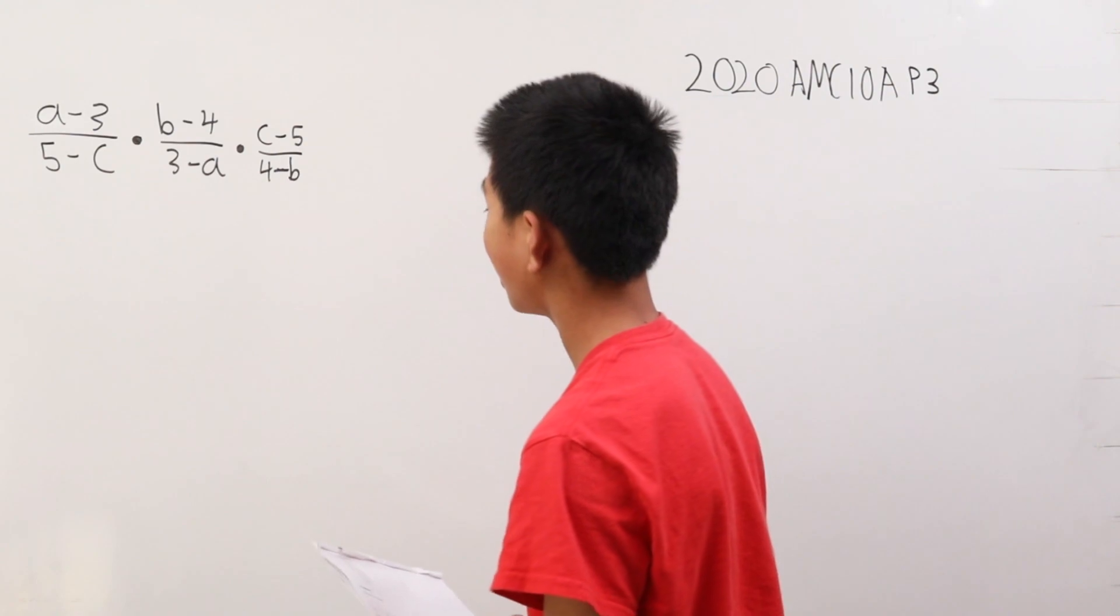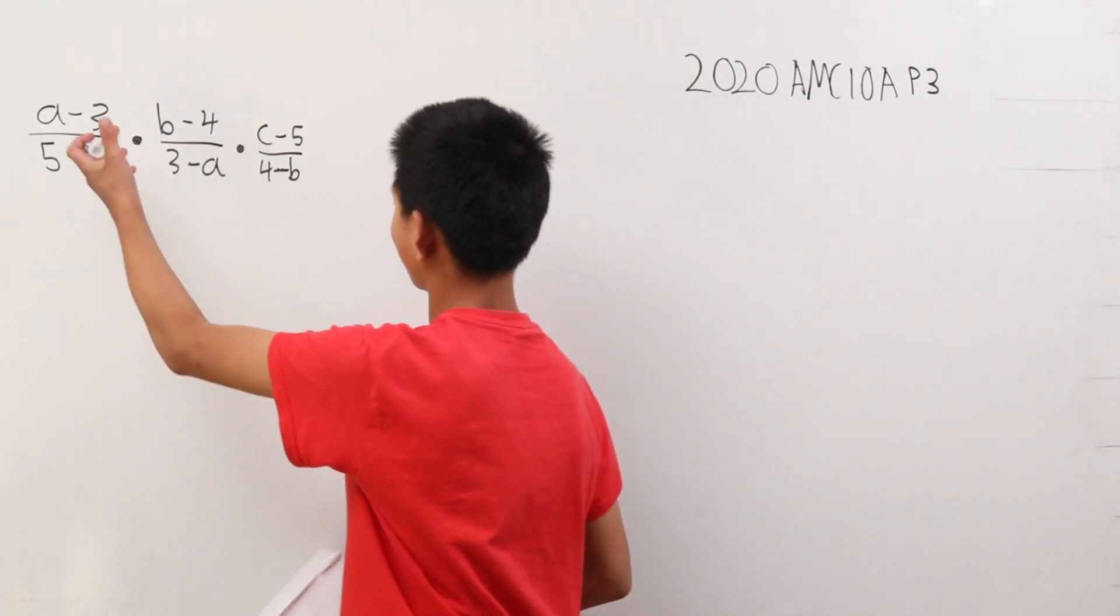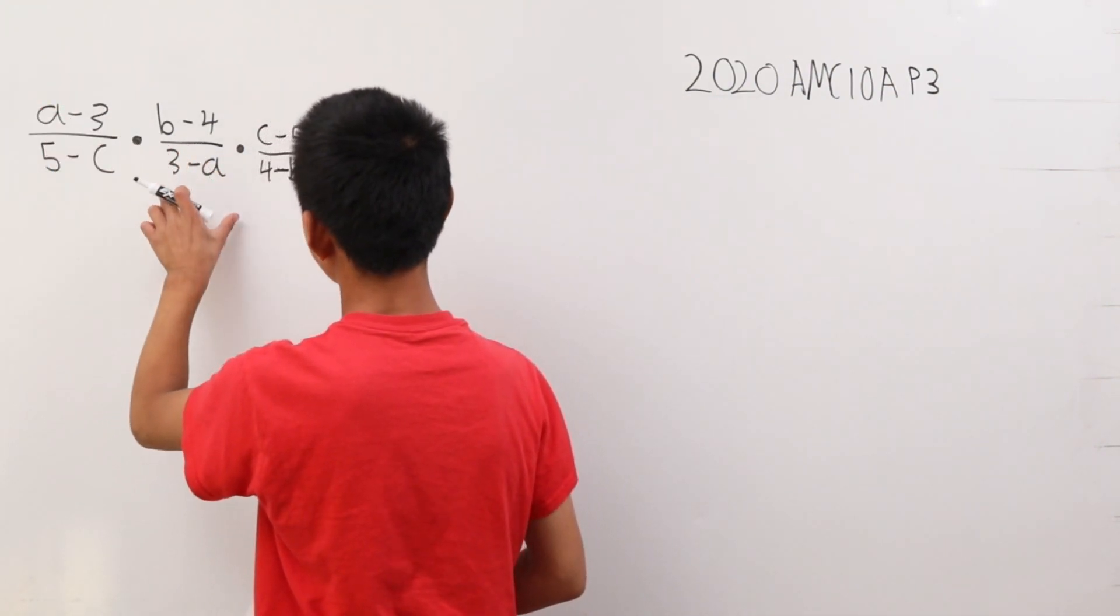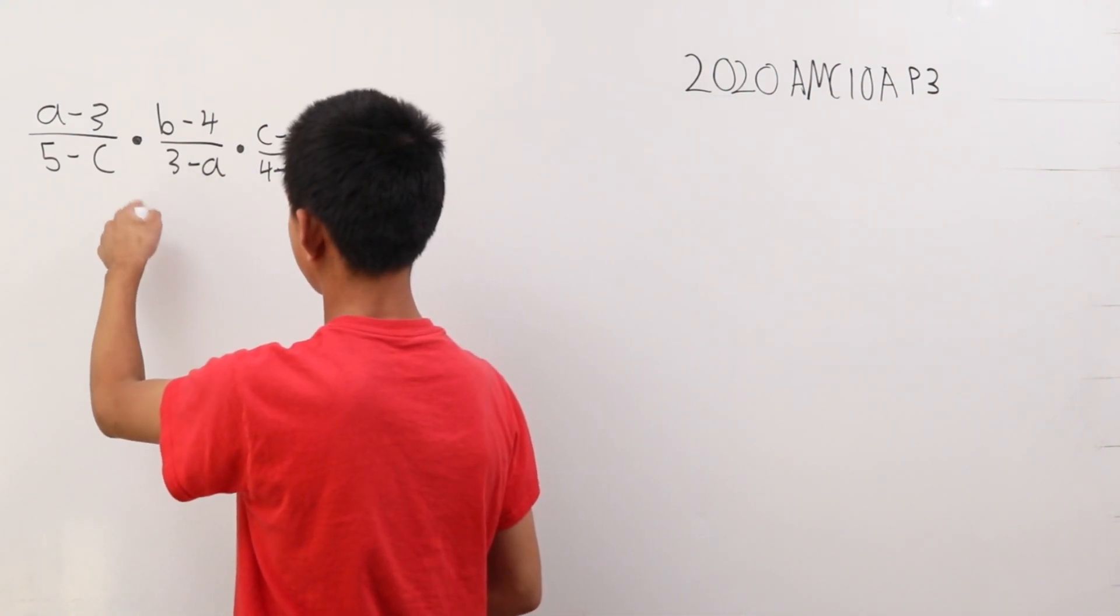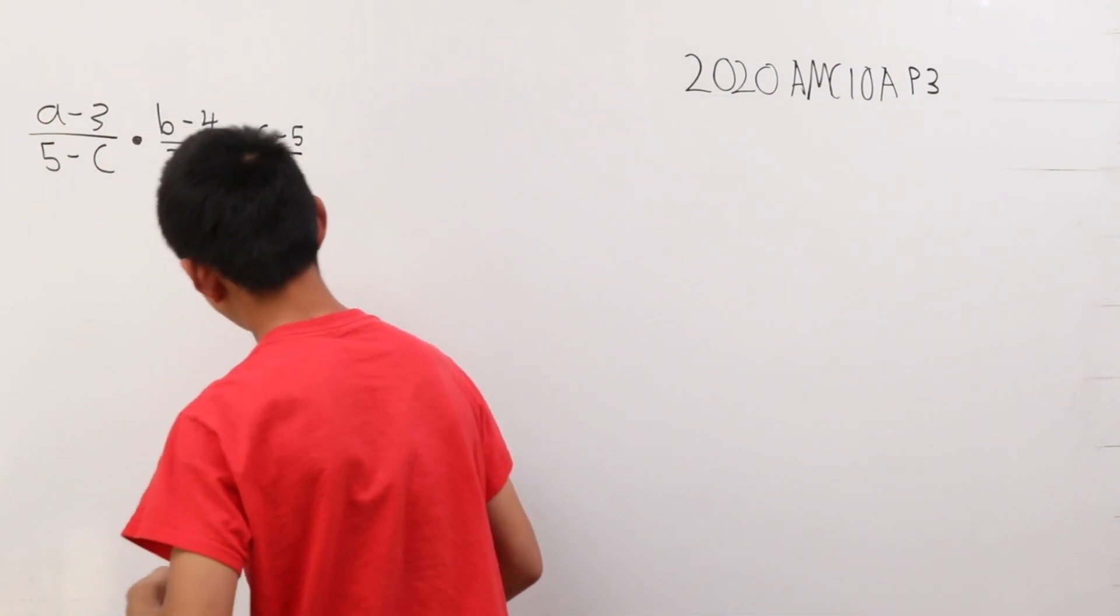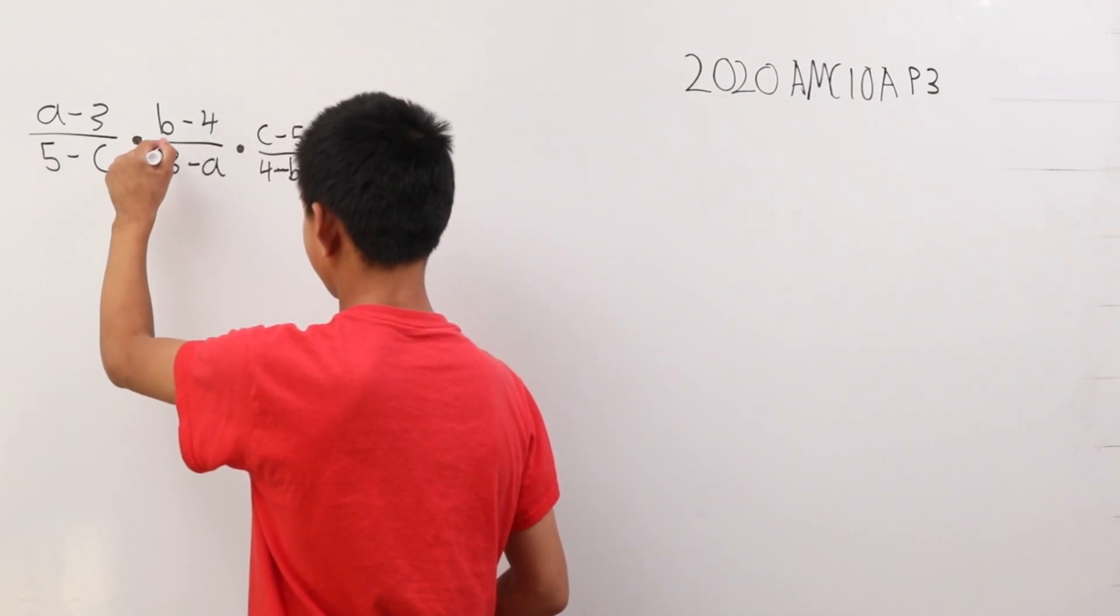Well, we can basically just evaluate this, because these are the reciprocals of these numbers. a minus 3, 3 minus a is basically this but turned around. It's like if you put a negative in front of this. That is why we can cancel out.